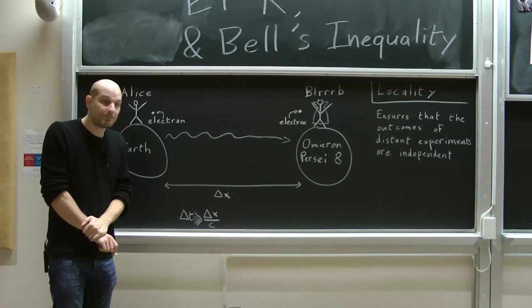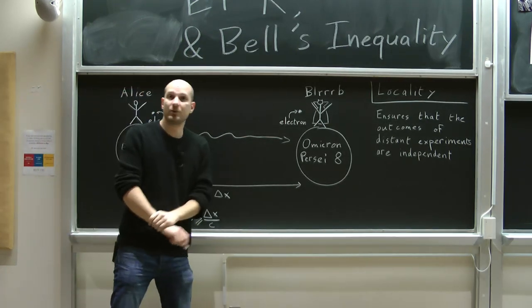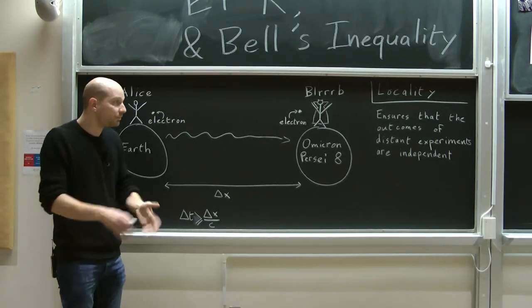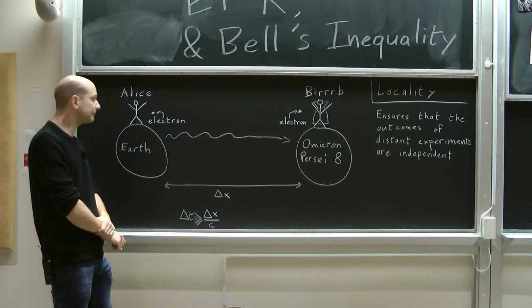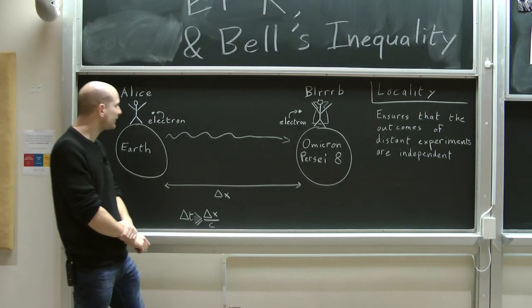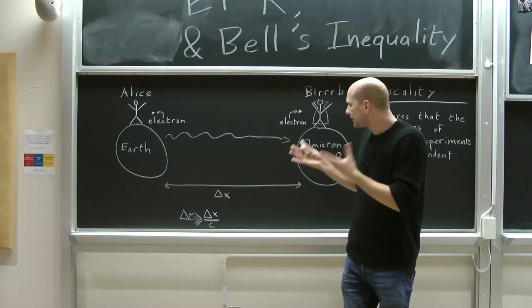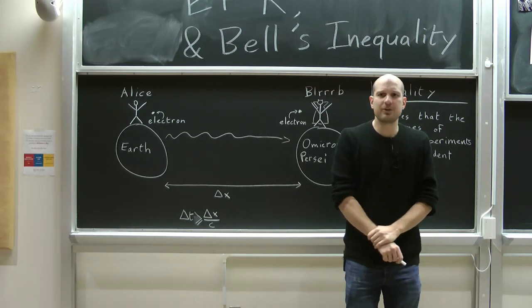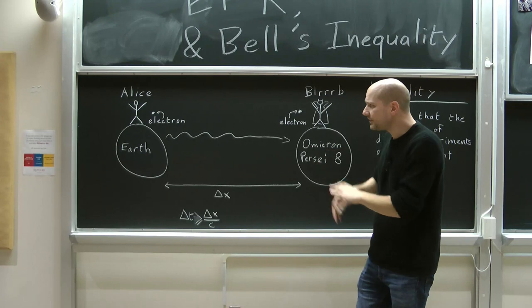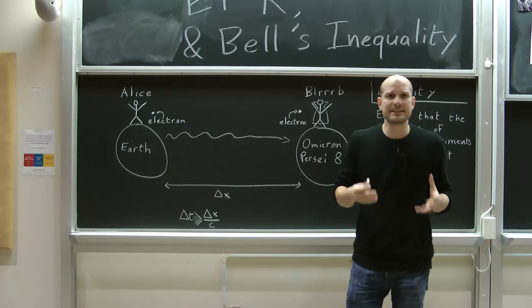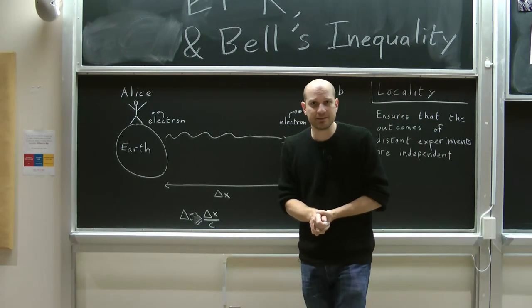Light travels at a finite speed, so the amount of time that will take will be a certain finite positive amount of time. So that's the implication of the principle of locality for this example, and from this point of view, locality seems like a very reasonable assumption to make.